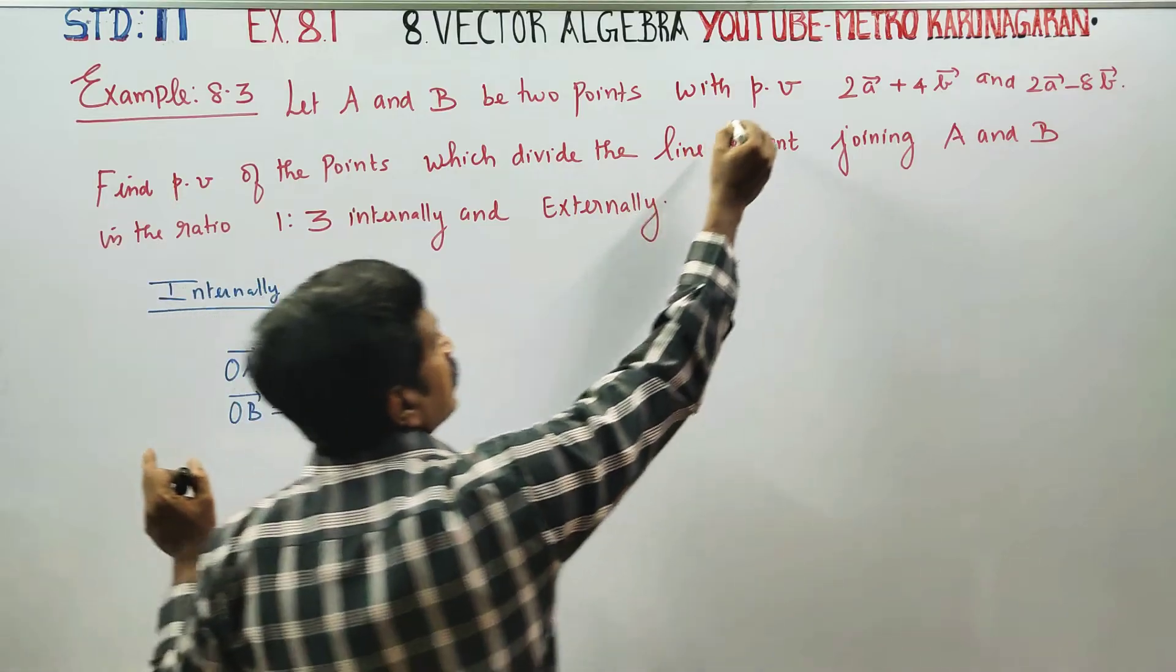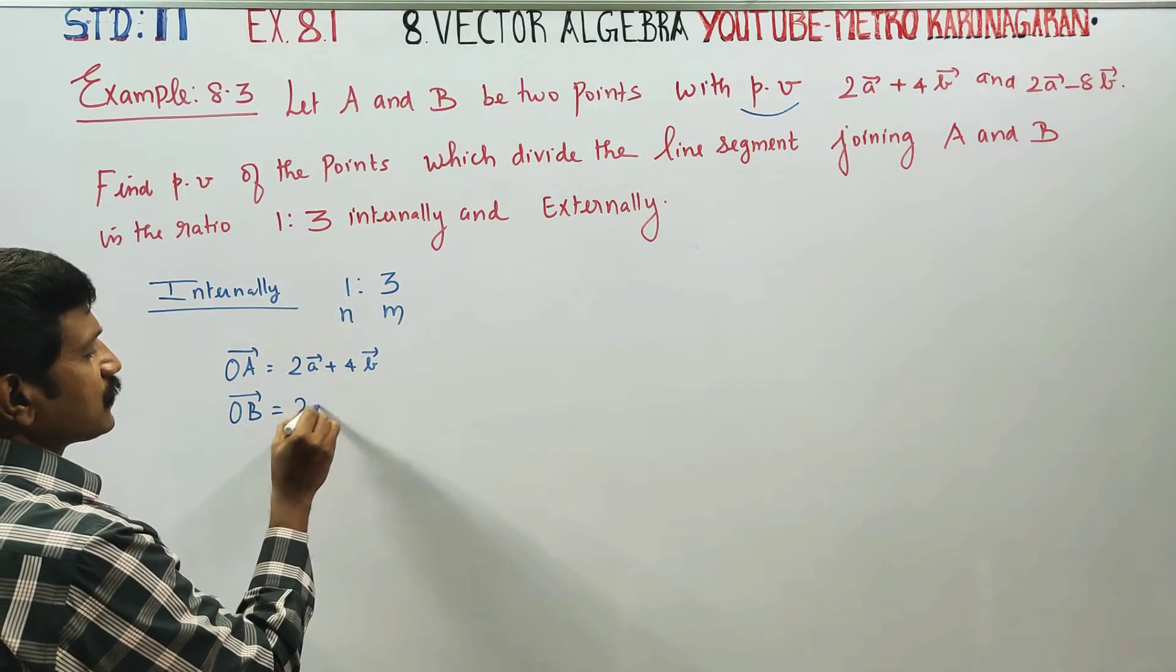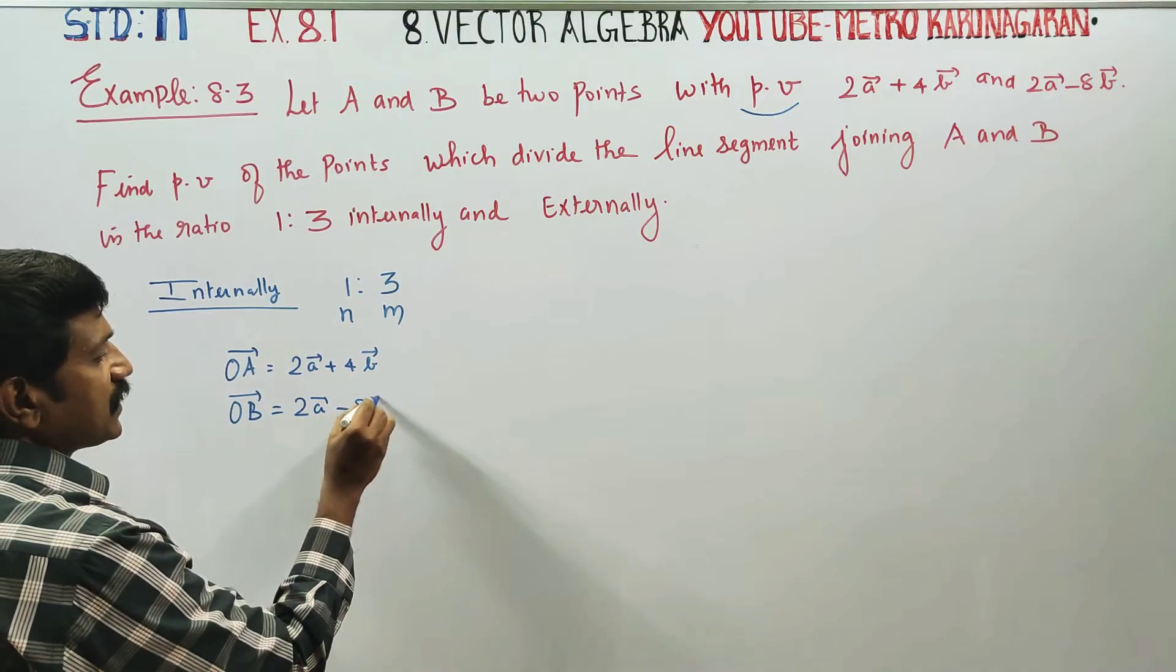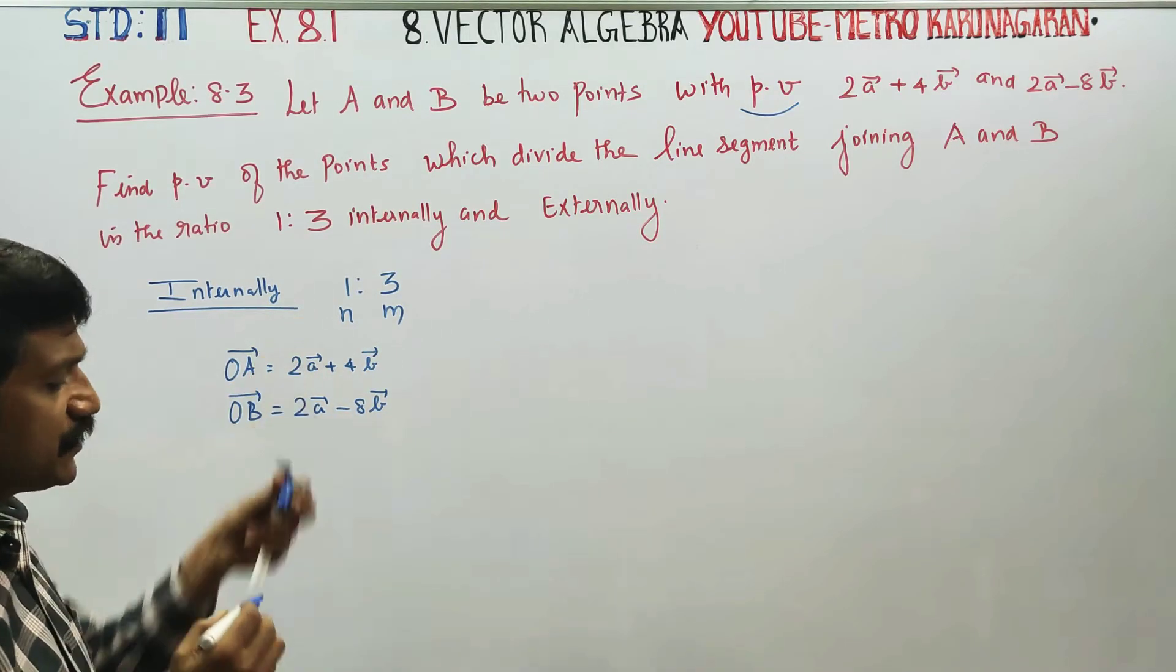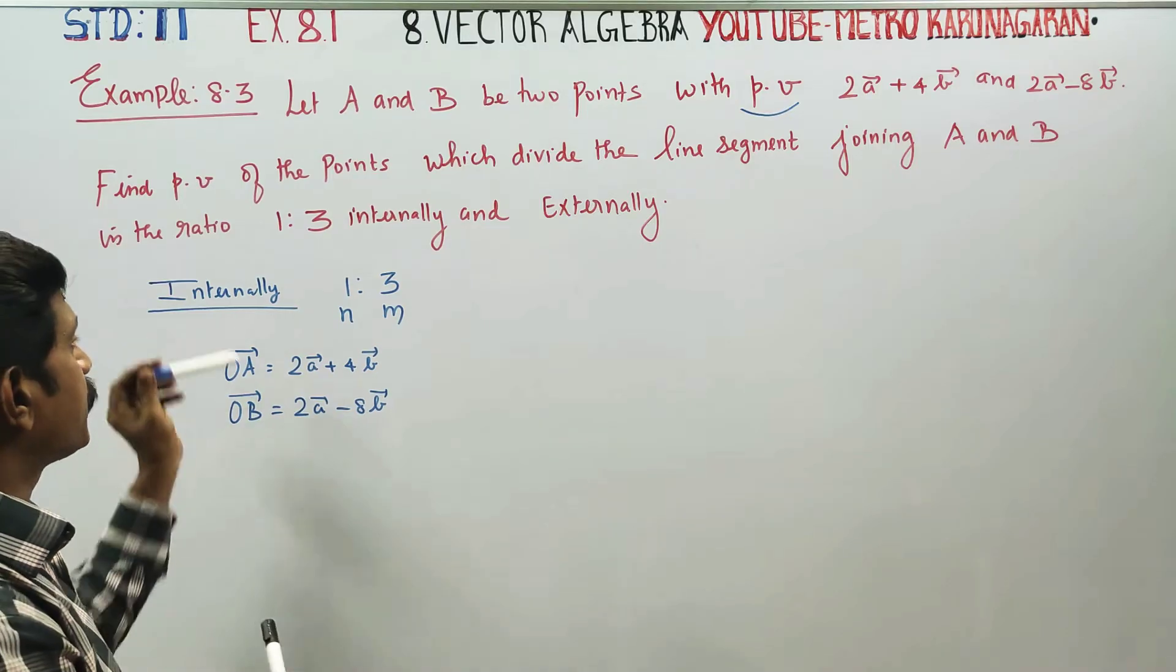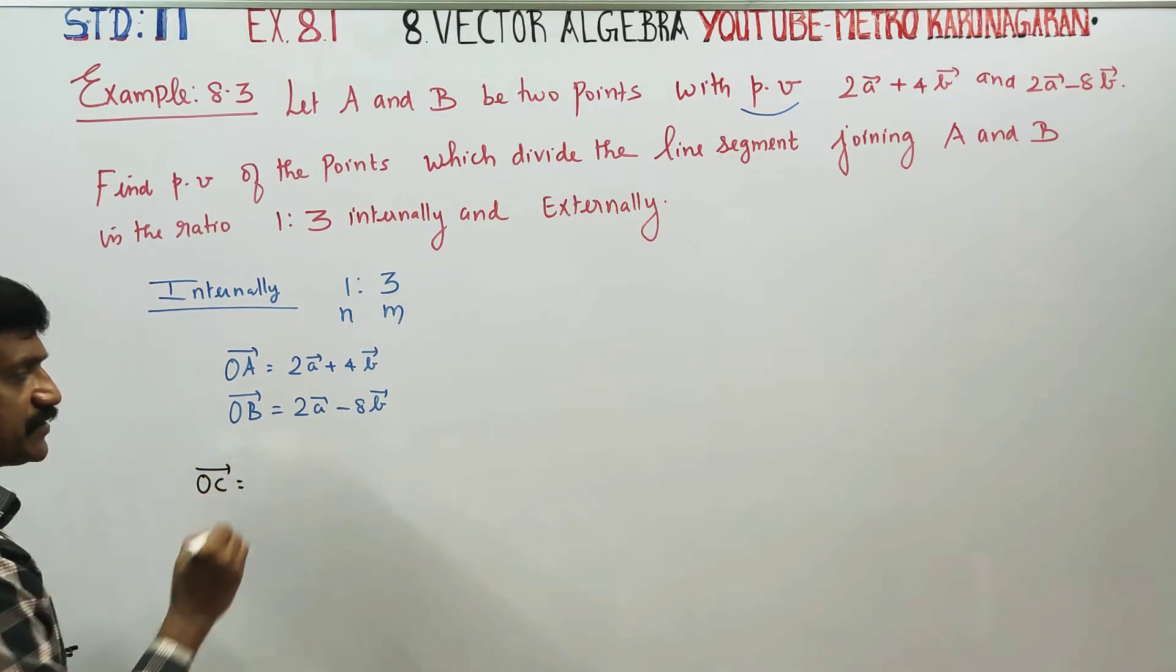That would be OB vector is equal to 2a vector minus 8b vector. Position vector of B, 10 points.